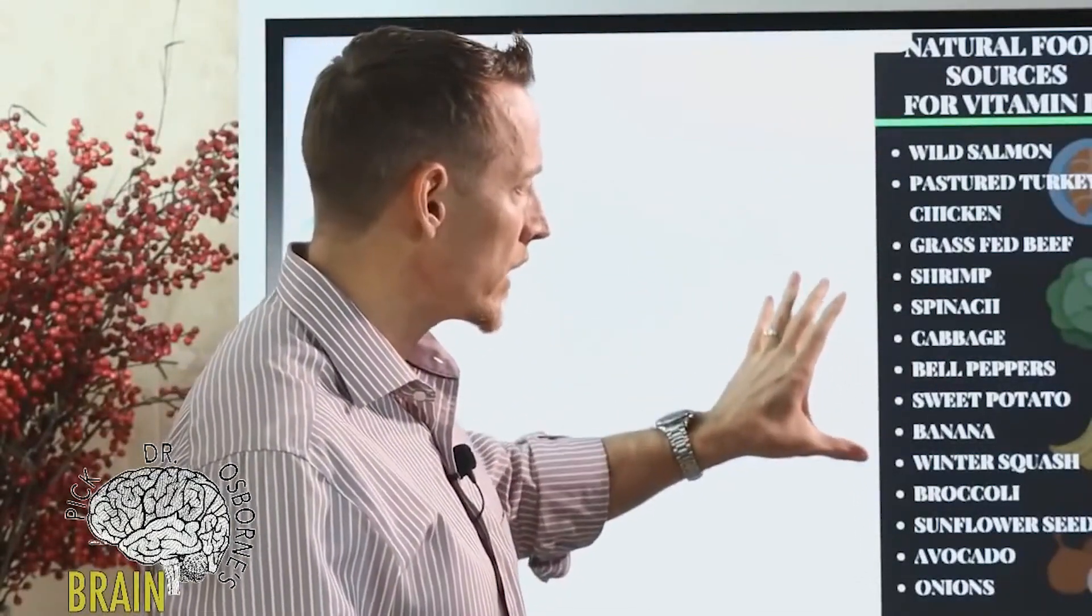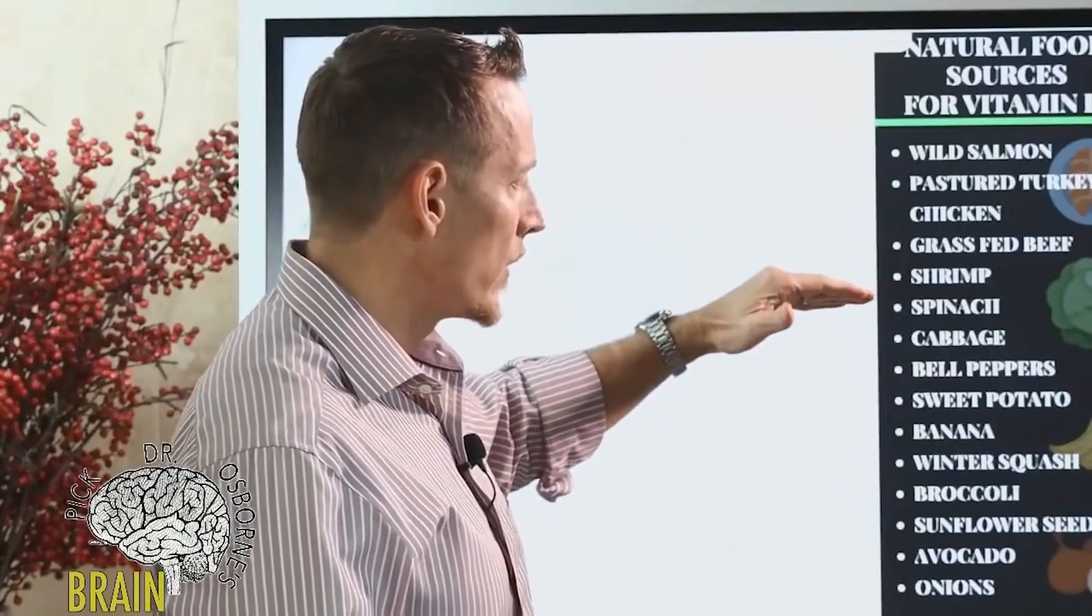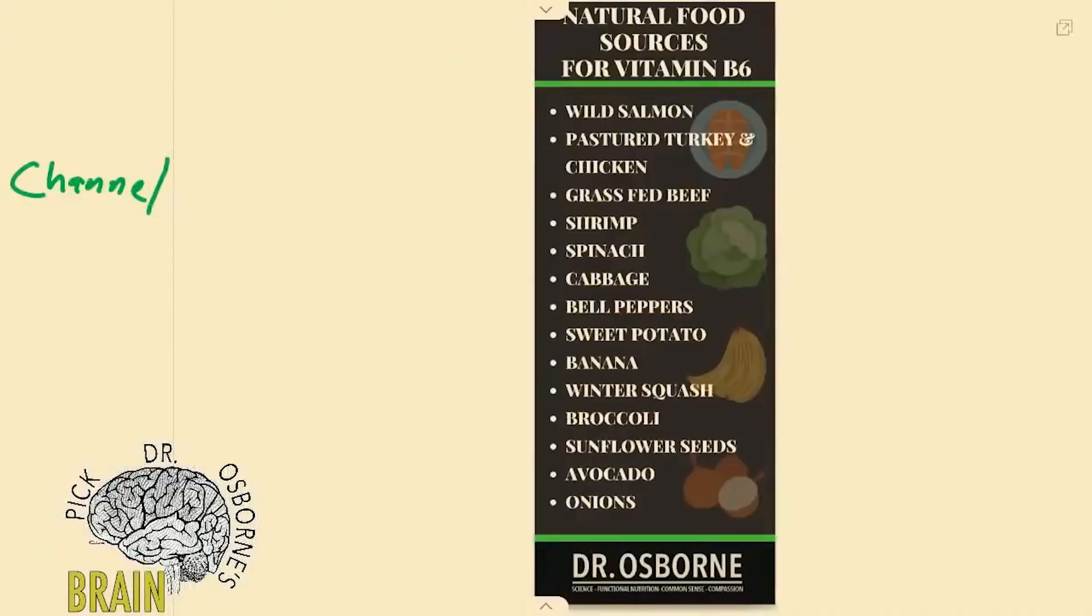It's got more than these vegetables and fruits that are listed down here. That being said though, you can get B6 from spinach, cabbage, bell peppers, sweet potato, banana, winter squash, broccoli, sunflower seeds, avocado and onions are again all good grain-free sources.